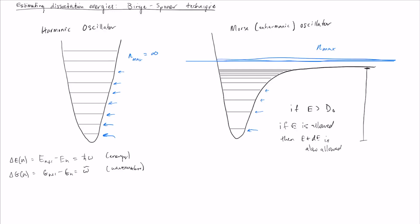Whereas for a Morse oscillator, this Δg at some point goes to zero as n gets large.